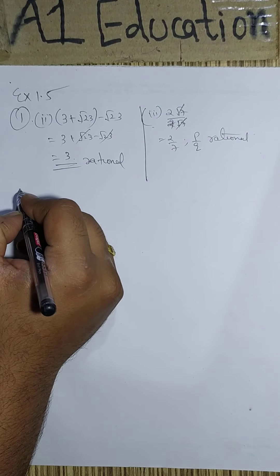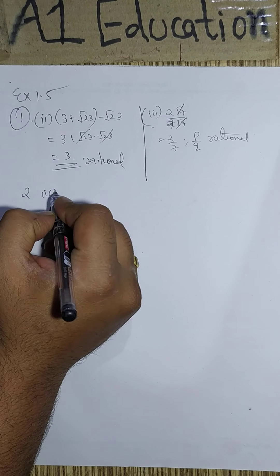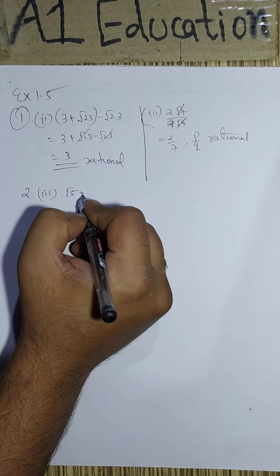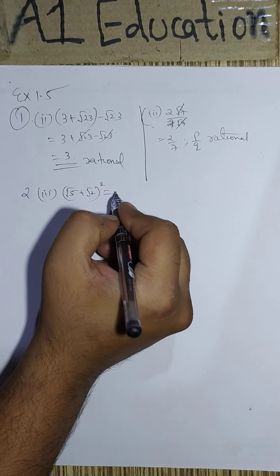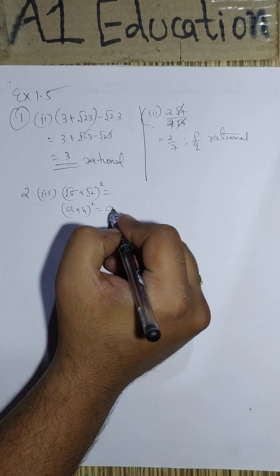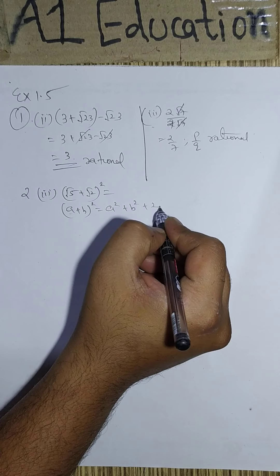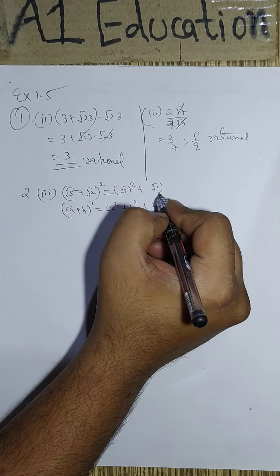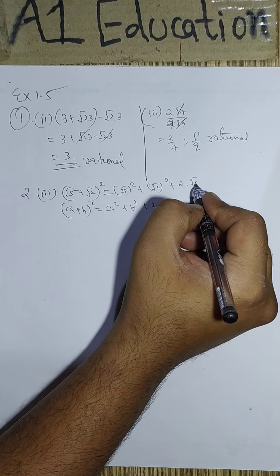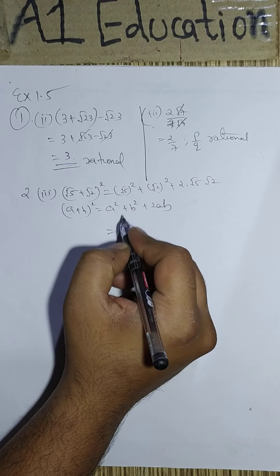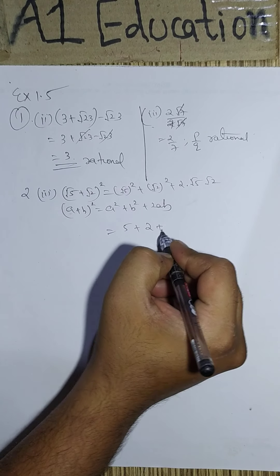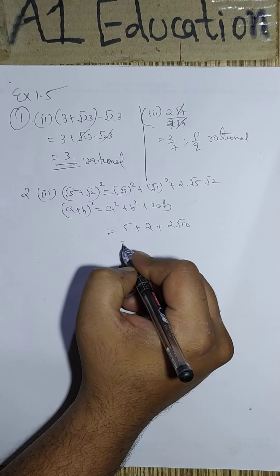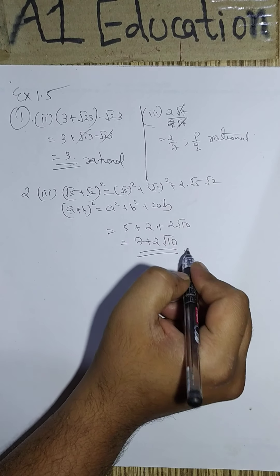Next term that we take, third one. That is root 5 plus root 2 square. Simple. Just as application of a plus b whole square a square plus b square plus 2ab. So this will be root 5 square plus root 2 square plus 2 into root 5 root 2. So this will be 5 plus 2 plus 2 root 10. That is 7 plus 2 root 10.